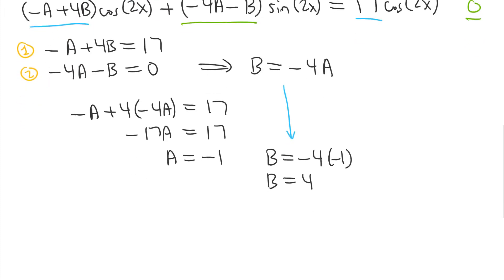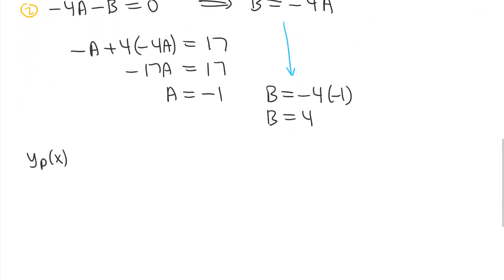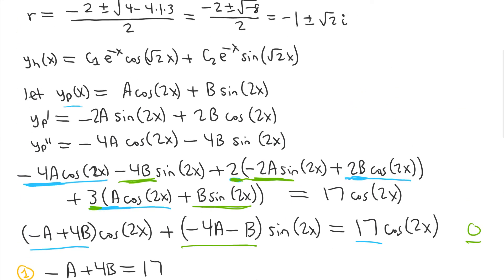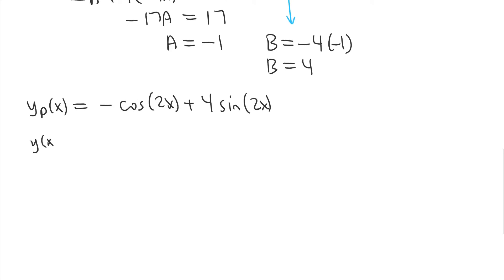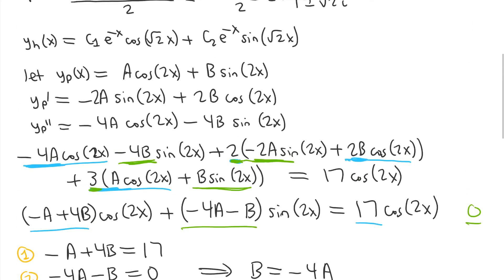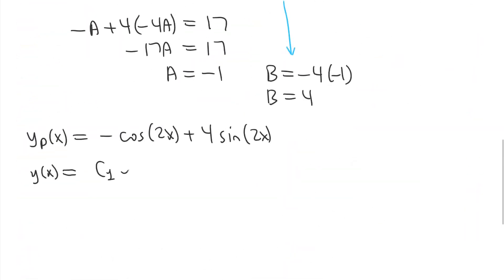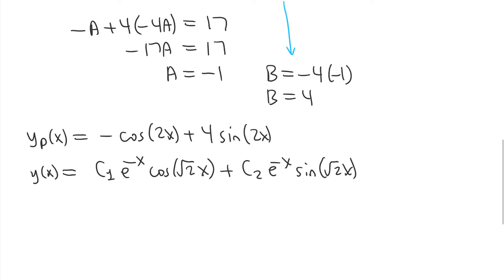We found our two coefficients, so our particular solution is negative cosine 2x plus 4 sine 2x. Now combining the complementary solution and the particular solution, our general solution is y(x) equals c1 e to the negative x cosine of root 2 times x plus c2 e to the negative x sine of root 2 times x, minus cosine 2x plus 4 sine 2x. That is our final answer.